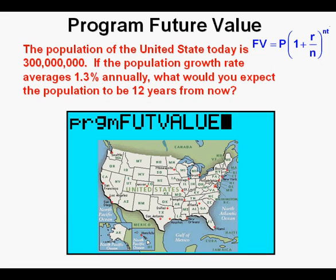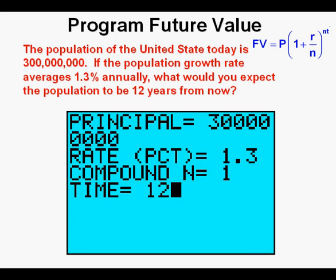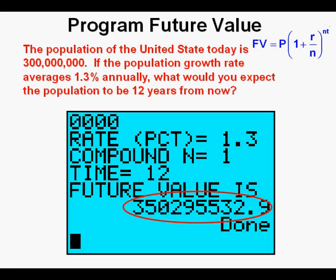Let's try another type of situation: population growth. The population of the United States today is 300 million. If the population growth rate averages 1.3% annually, what would you expect the population to be 12 years from now? Here are all the numbers entered: the starting amount of 300 million, the percentage rate of 1.3%, the compounding period of 1, and the time of 12 for 12 years. Press enter. In 12 years at that rate, the population will be a little over 350 million.